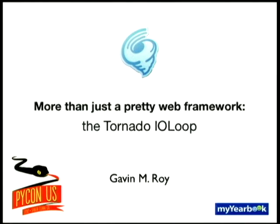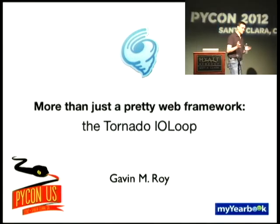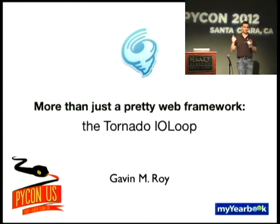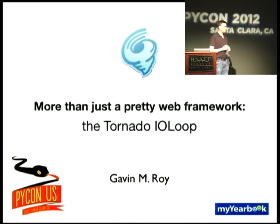Basically, the idea was: why write something new? Why write a new async stack? Twisted's out there. It does what it does, and it's good at doing so. One of the problems, though, is Twisted has kind of a non-Pythonic reputation. It's complex. The documentation is a little sparse. And Tornado takes more of a minimalistic approach.